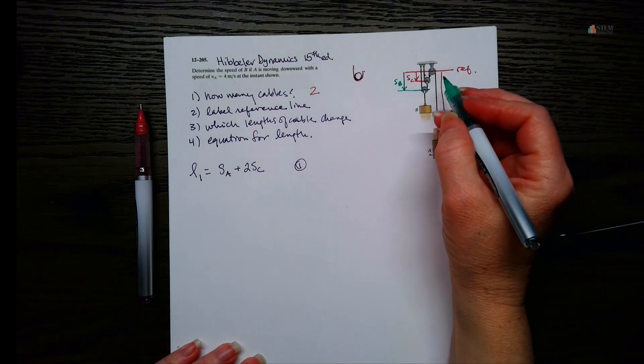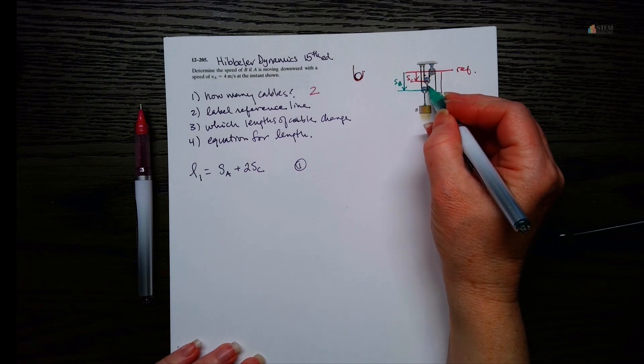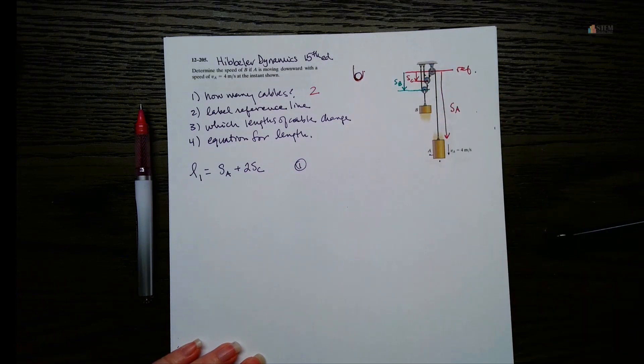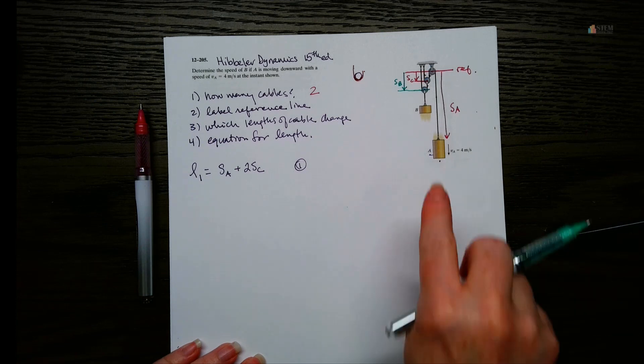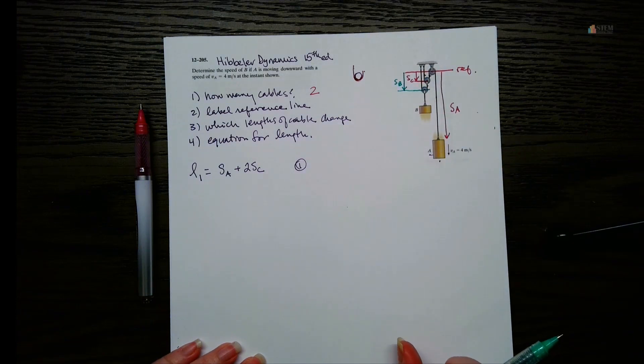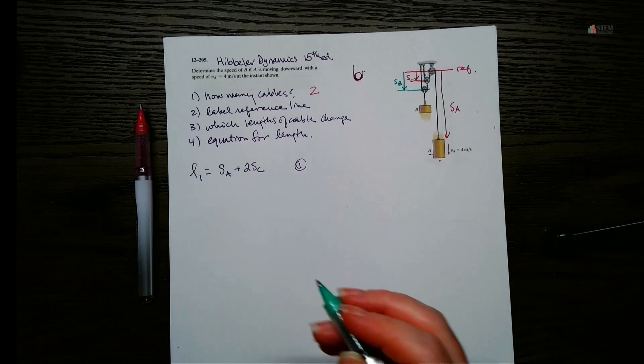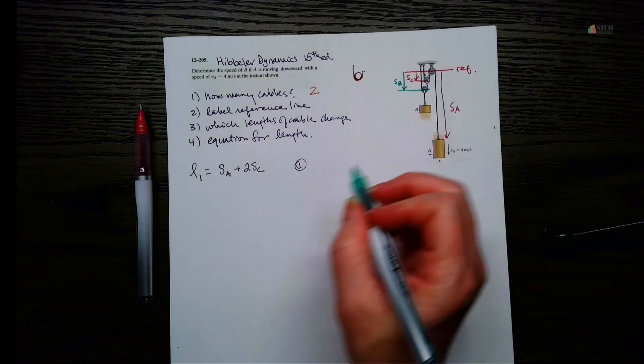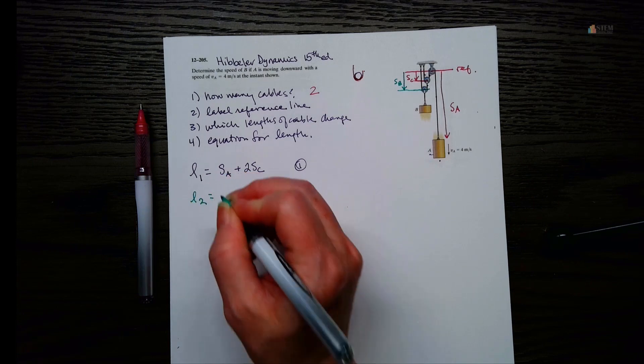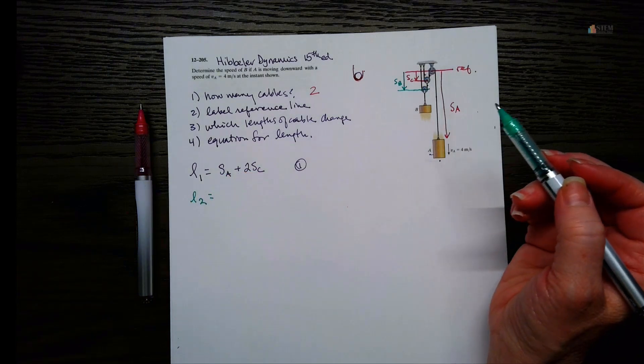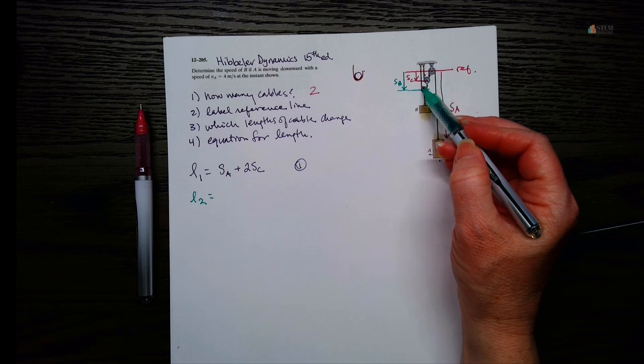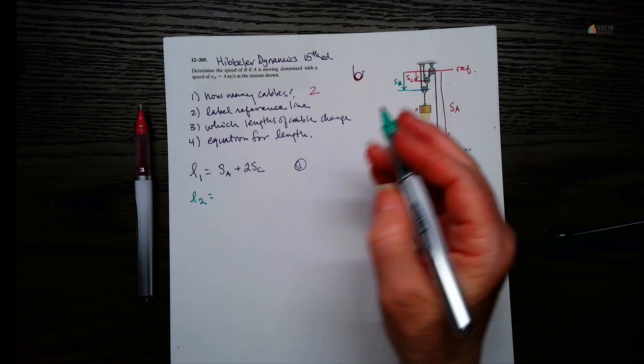Now, I know you might be thinking, well, what about this one right here? But I'll show you what we're going to do for that. Because we want to pick as few variables here as we can. We don't want a ton of variables because that makes it harder to solve. Okay, so now let's call this length two. Alright, so length two is going to be the length SB, which is right here.